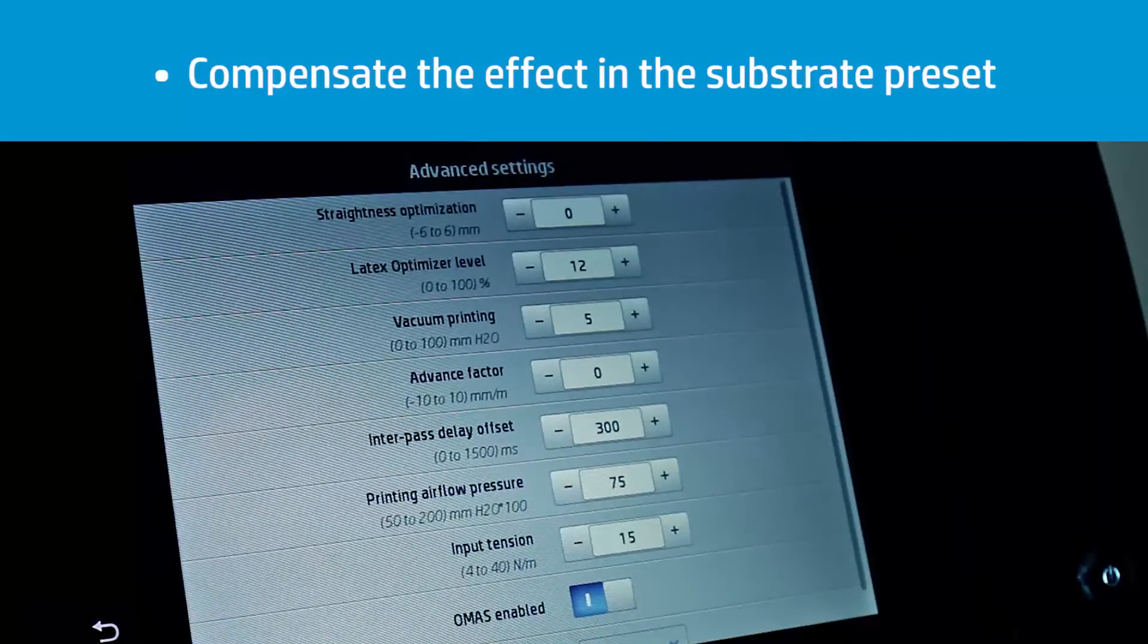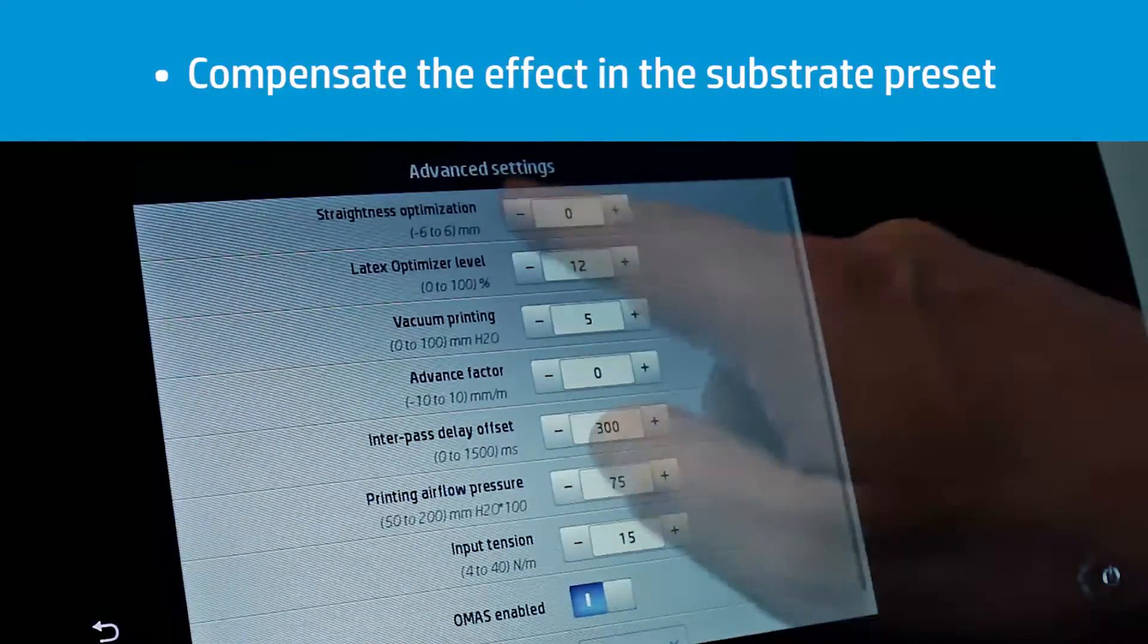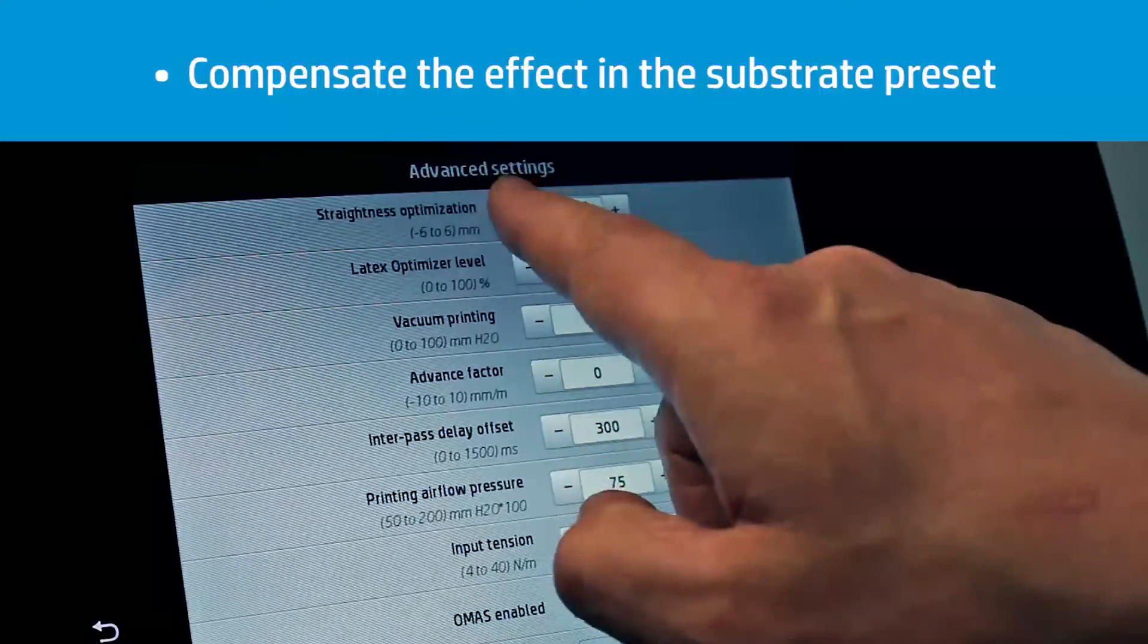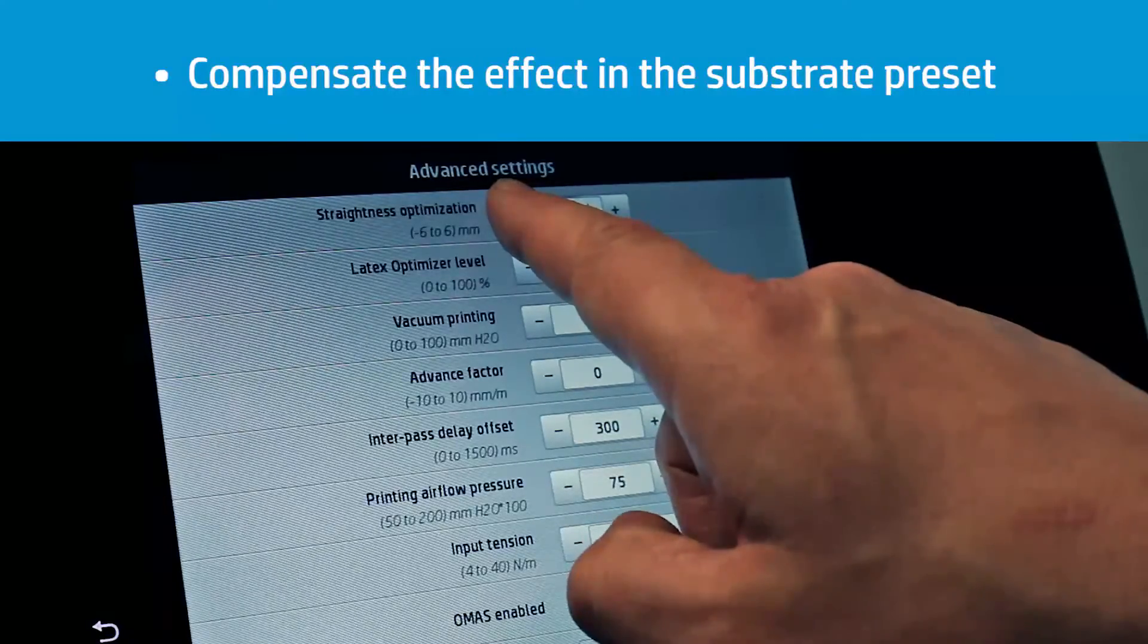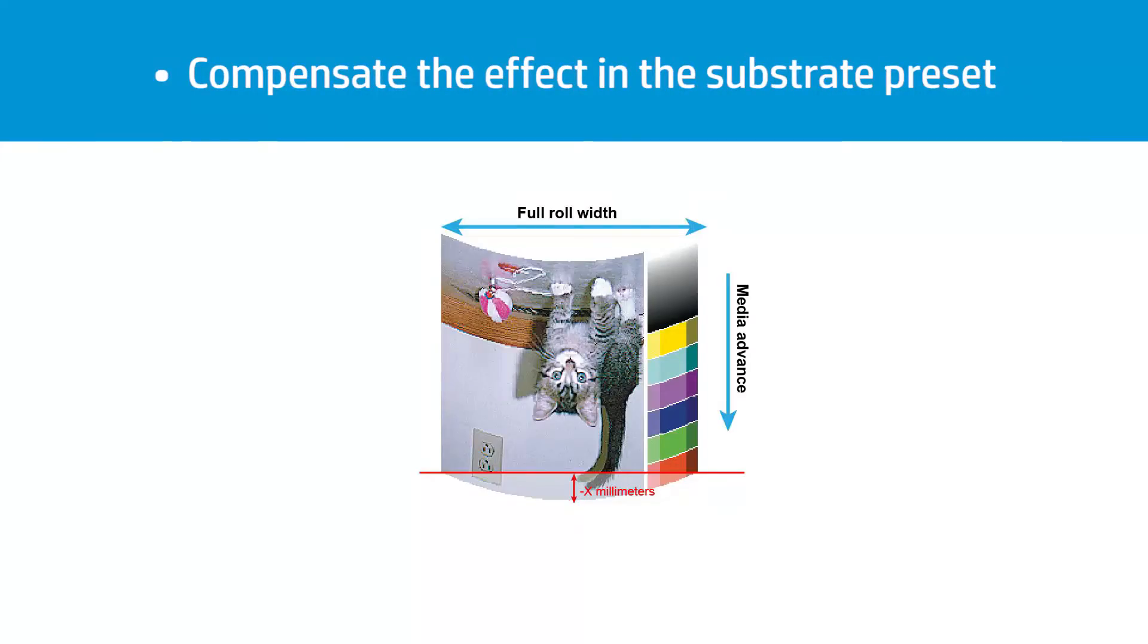This effect can be compensated by measuring the deformation and introducing the right value for the straightness optimization parameter. This parameter can also be changed from some of the software RIPs. The chosen value should represent the vertical distance that the center of the substrate has moved with respect to the left and right edges.